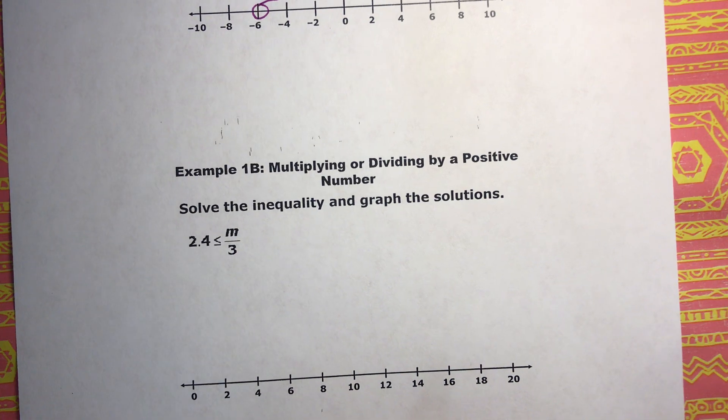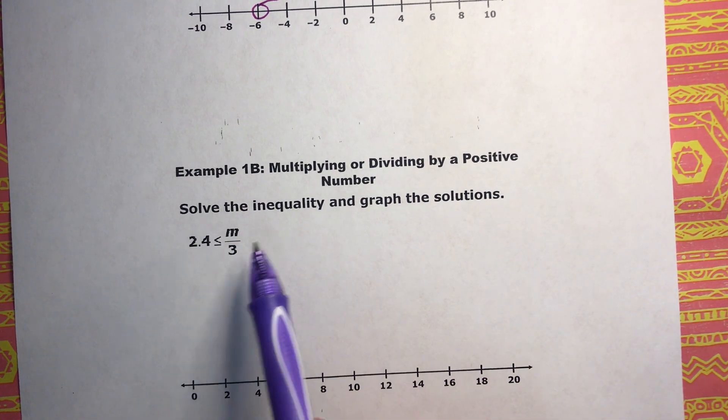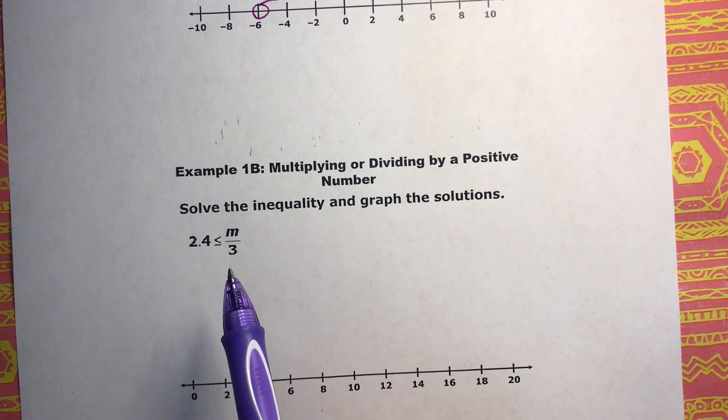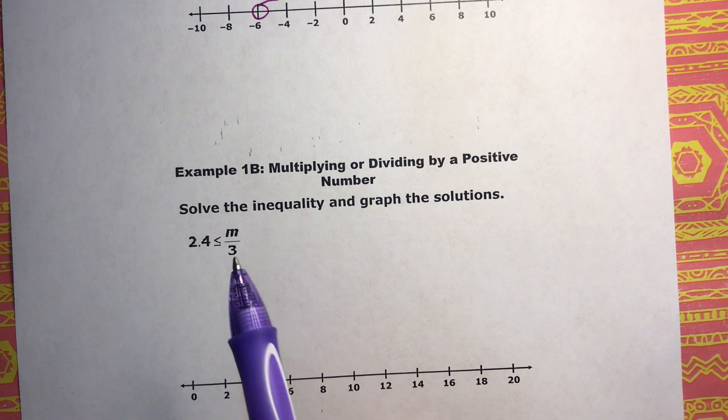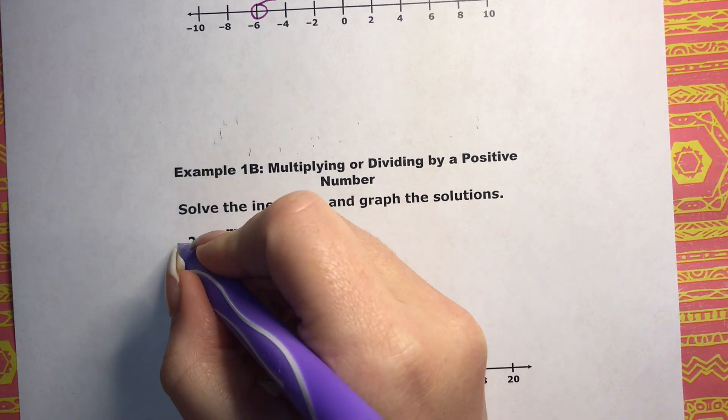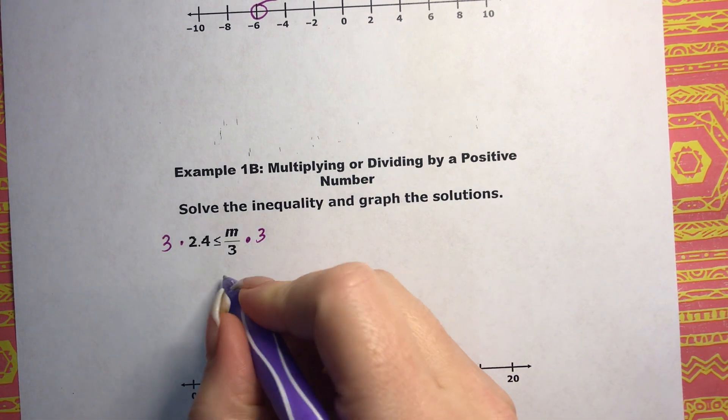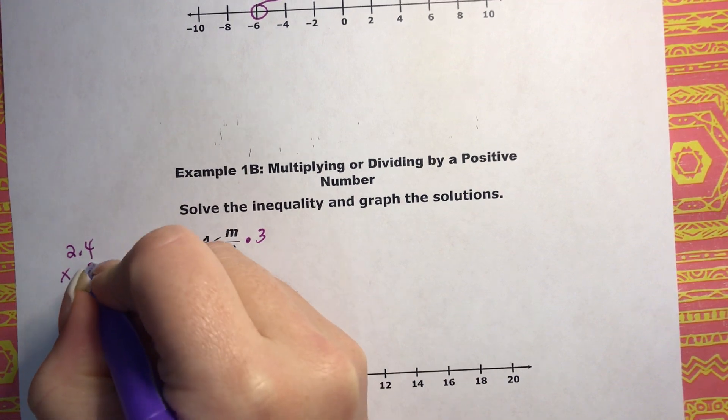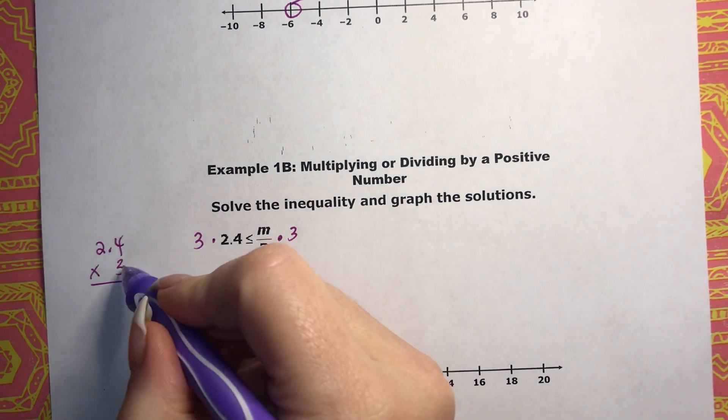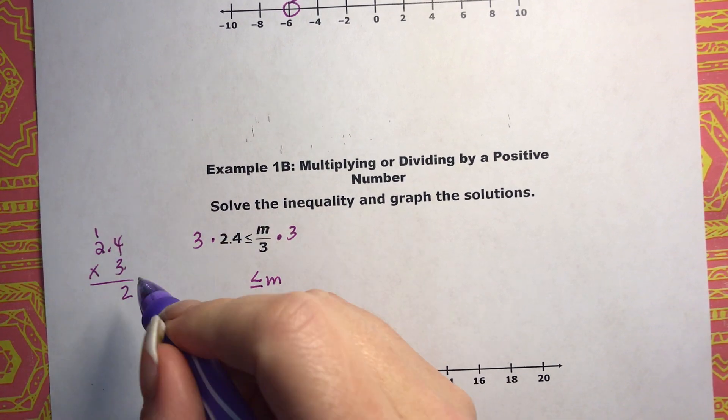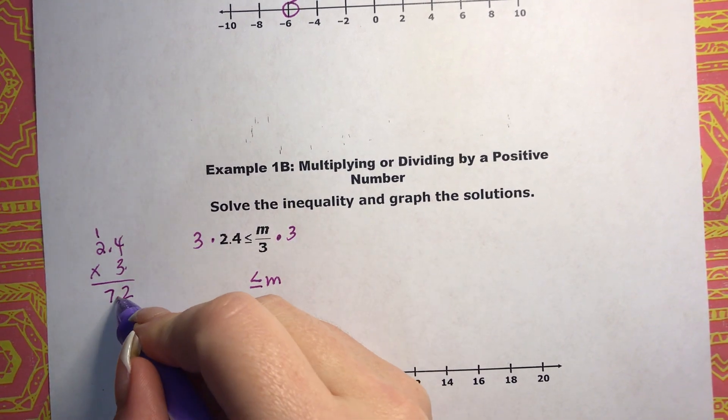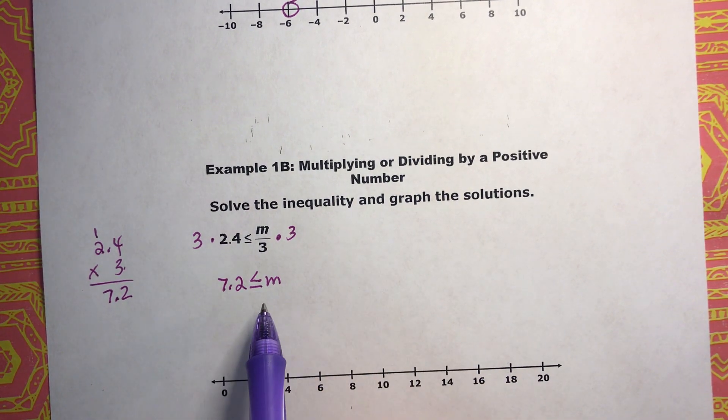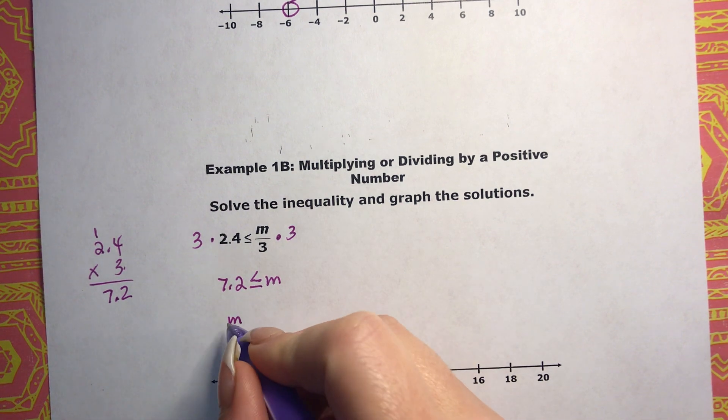Okay, let's look at 1b. So we're going to solve this inequality and graph the solutions. We're trying to isolate m. Right now, this is m divided by 3. We have to do the inverse operation of division to get m by itself, which is multiplication. So we're just going to multiply both sides by 3. And what we end up with is, 3 times 4 is 12. 3 times 2 is 6 plus 1 is 7. And there's one decimal, so there's one decimal spot there. So that's 7.2. Now, whenever you're doing inequalities like this, the inequality has to be on the left side.